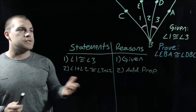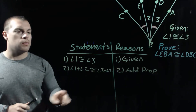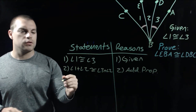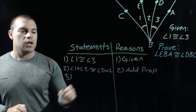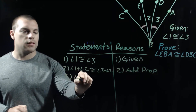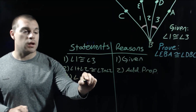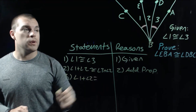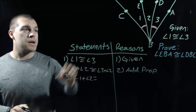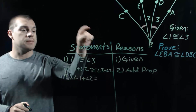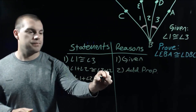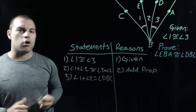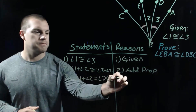Now in step number 3, I want to look more closely at angle 1 plus angle 2. If we added those things together, angle 1 plus angle 2, we should get that bigger angle DBC. And that's using our angle addition postulate.